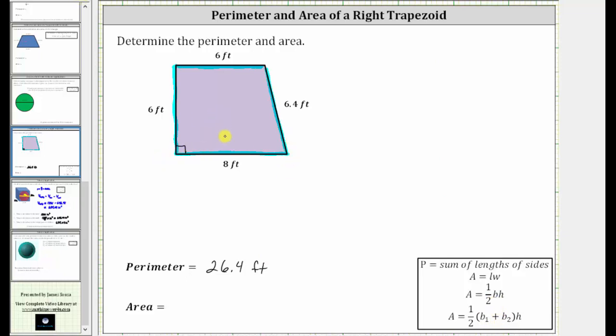So looking at the trapezoid, let's call the bottom base B sub one, and the top base B sub two. And because we have a right trapezoid, this length here is the height, the height is six feet.